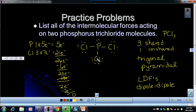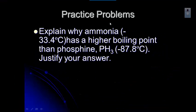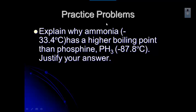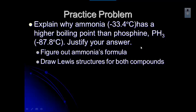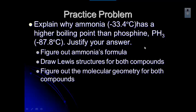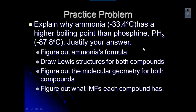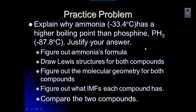Let's try another one. Explain why ammonia, with a boiling point of -33.4°C, has a higher boiling point than phosphine (PH3), which has a boiling point of -87.8°C. Justify your answer. I'll want you to show the formula for ammonia, draw Lewis structures for both compounds, figure out the molecular geometry for both, determine the intermolecular forces each has, and then compare those two compounds to get the answer.